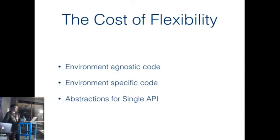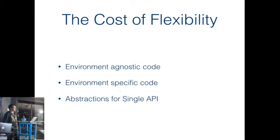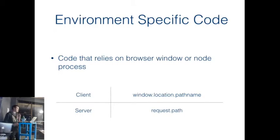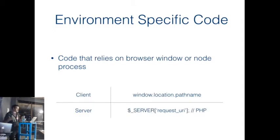It's not all good - there are plenty of complications. The cost of flexibility means your code generally falls into three categories: environment agnostic, where it doesn't rely on anything particular from the client or browser and you don't have to do anything with it; environment specific, where it does and you have to duplicate code, acknowledging whether it's the browser or the server; and abstractions, which is where you want all your code to be. Without abstractions you're duplicating code, which makes maintainability worse. For example if you want to get the pathname, in the browser you're checking window.location.pathname, on the server you're checking the path - you might as well have two separate codebases.